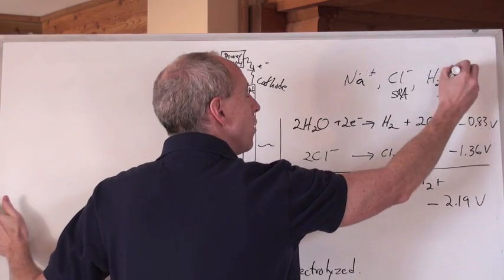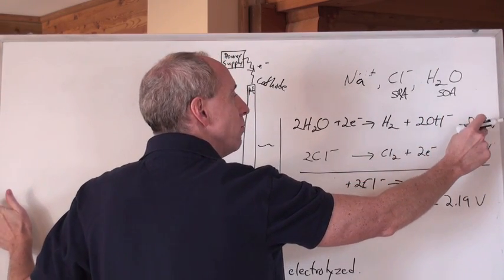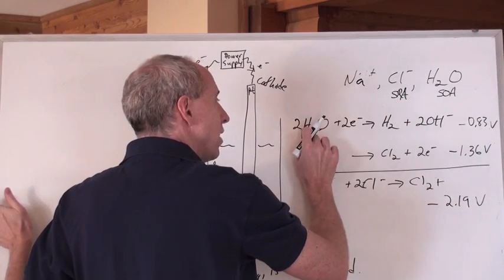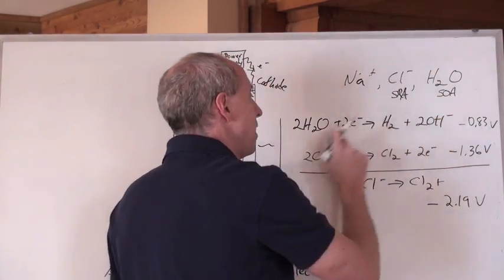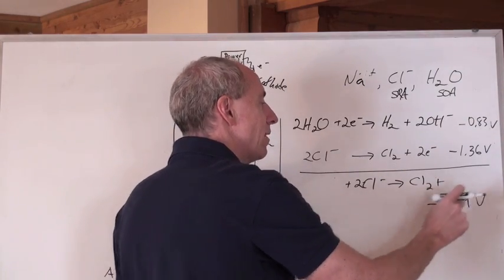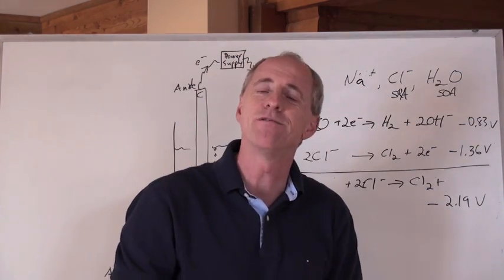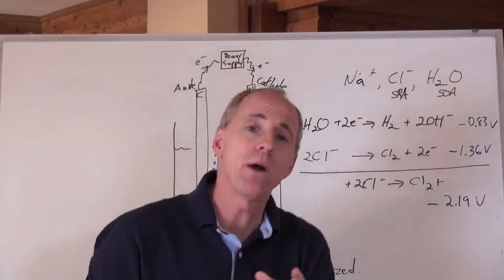I write this one out from the data booklet across from negative 0.83 volts, that's where the strong oxidizing agent is. I write it out exactly from left to right. And then, I reverse that SRA and add it to that to get a negative 2.19 volts.